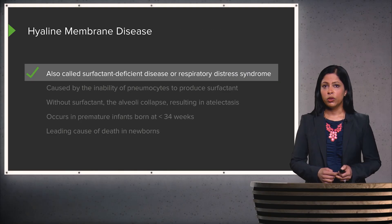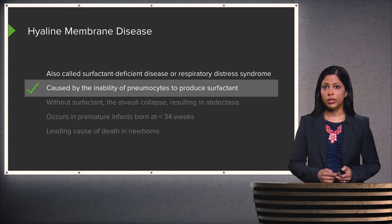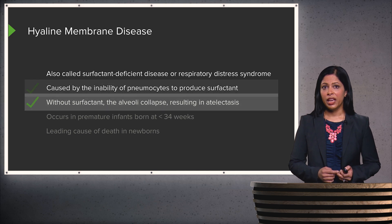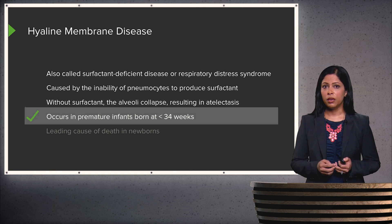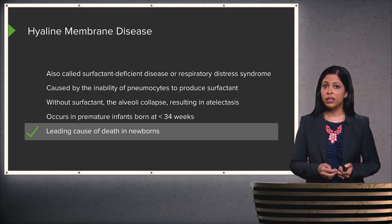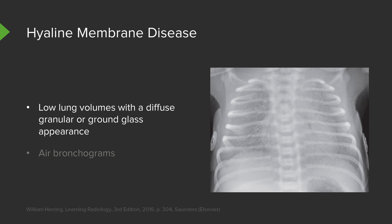Hyaline membrane disease is also called surfactant deficiency disease or respiratory distress syndrome. It's caused by the inability of the pneumocytes to produce surfactant, and without surfactant, the alveoli collapse and result in atelectasis. This is most commonly seen in premature infants born at less than 34 weeks of gestation, and it's the leading cause of death in newborns. In this example, the lung volumes are low, and you can see a diffuse granular or ground glass appearance to both lungs. With hyaline membrane disease, you may also have the presence of air bronchograms.